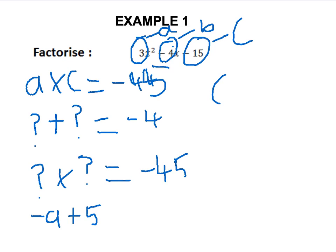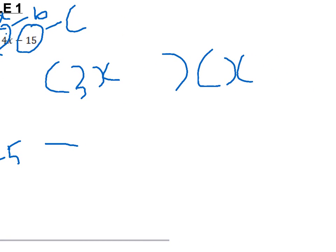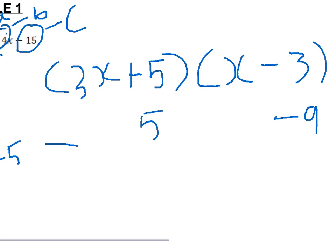We therefore open up the brackets, which gives us 3x and x. We know that the numbers below are minus 9 and 5. We therefore do minus 9 divided by 3 which equals minus 3, and 5 divided by 1, which is the coefficient of x on the second bracket, which equals plus 5. Therefore this works.